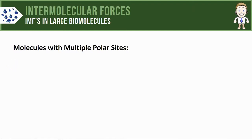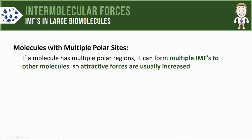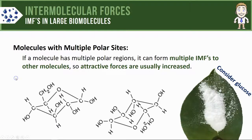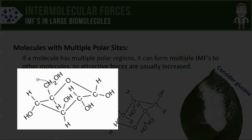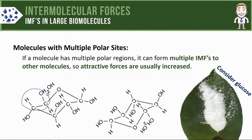Let's start by looking at large molecules that have multiple regions that would be considered polar. If your molecule has multiple polar regions, it can form multiple intermolecular forces to other molecules. As a result, because there are multiple intermolecular forces that can form, attractive forces between molecules like this tend to be increased. To show you what this might look like, let's consider a sample of glucose and the two glucose molecules shown here. These molecules are giant, so it doesn't really make sense to call them simply polar or non-polar.